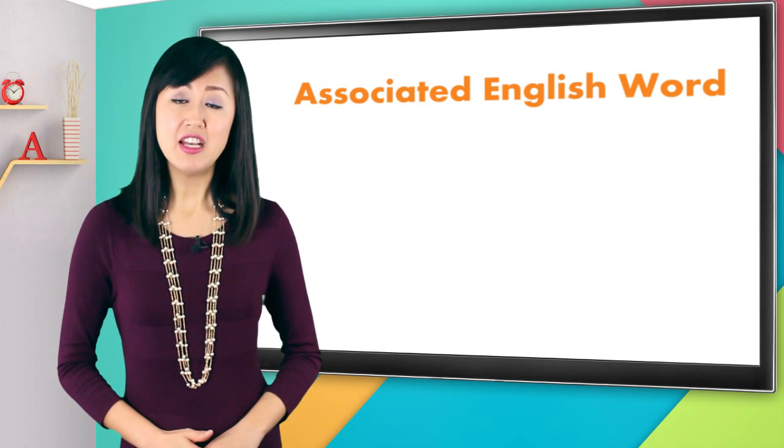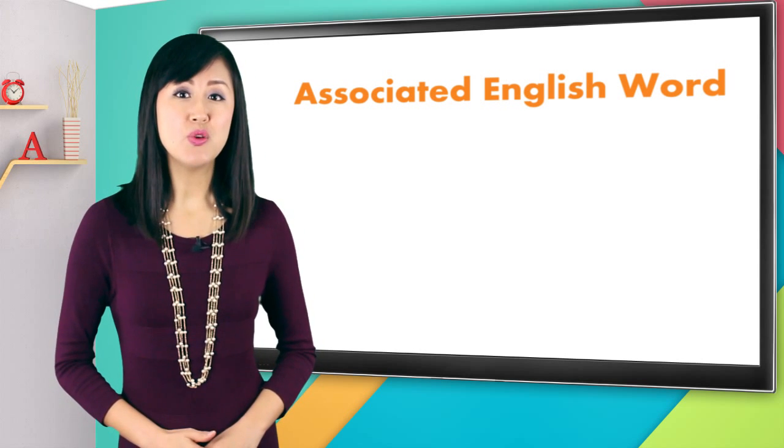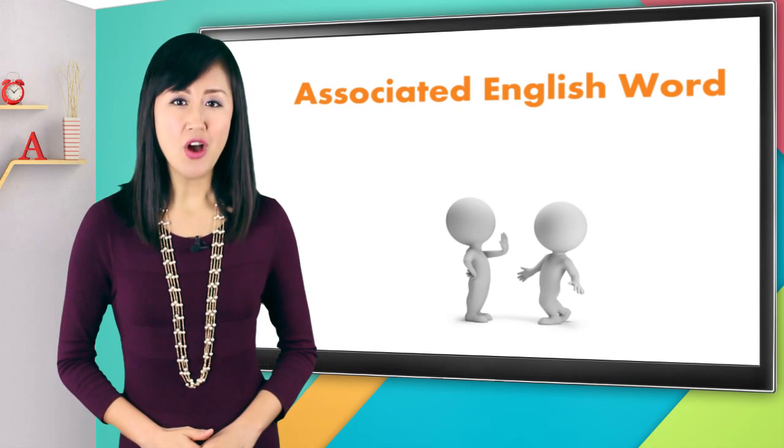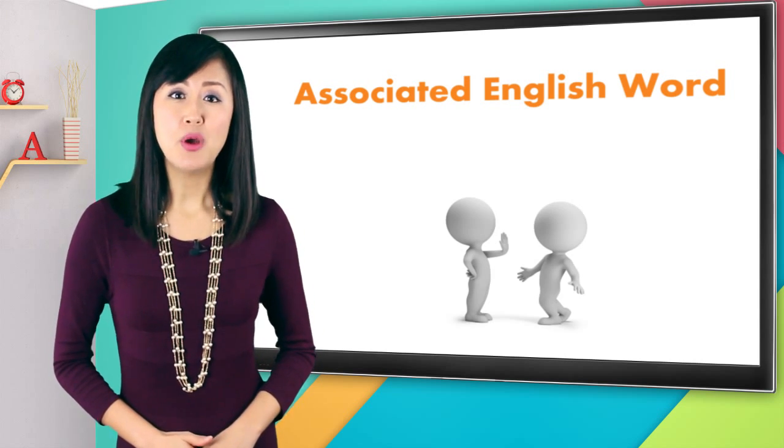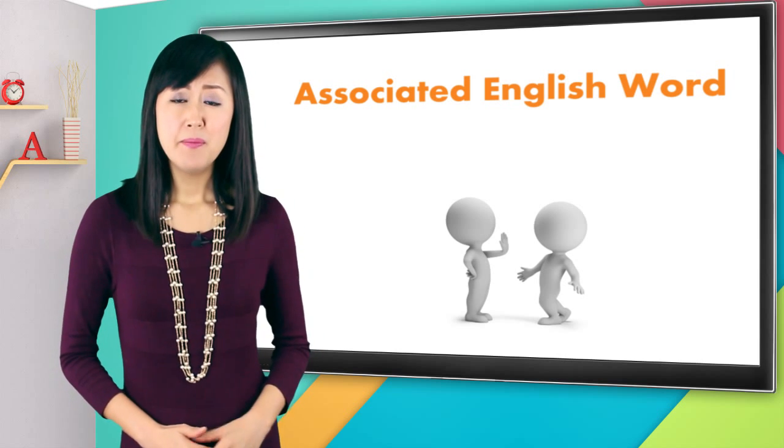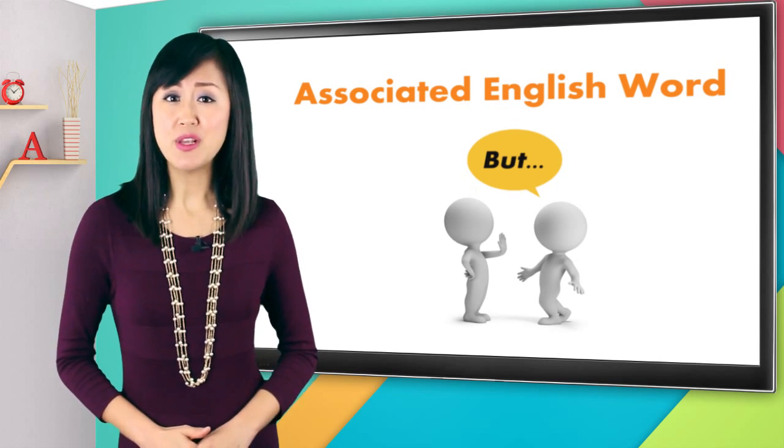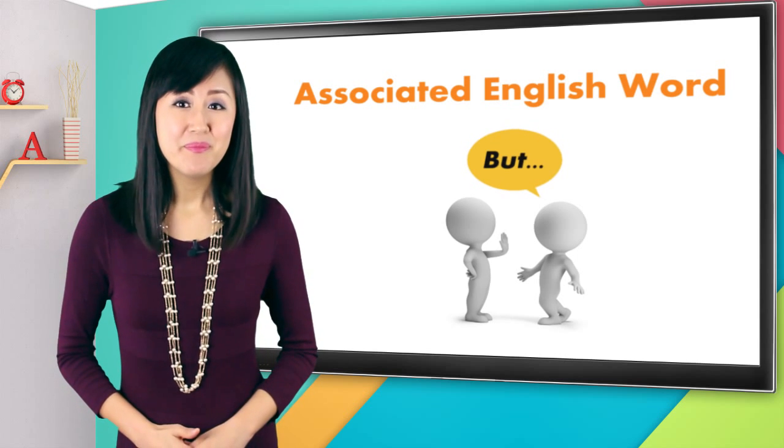If you want to have an associated English word to use with a neutral tone, you can try this: pretend somebody is cutting you off or interrupting you when you speak. You're trying to say 'but the way I see it,' and then they cut you off before you can even finish the word 'but' - 'ba'.